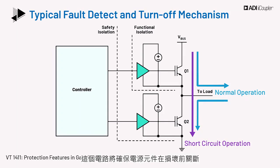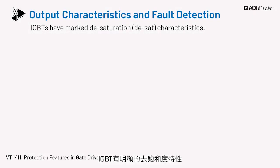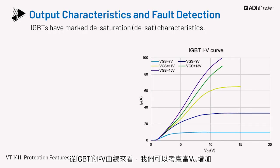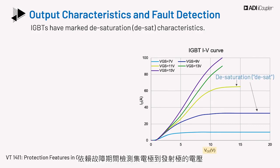A protection circuit will ensure that the power device is turned off before damage. IGBTs have marked desaturation, also called desat characteristics. In power applications, the IGBT is operated in its saturation region. From the IV curve of the IGBT, when VCE is increasing, the IGBT is not in the saturation region. A desat mechanism is used that relies on detecting the collector-to-emitter voltage during a fault and can help protect the device.